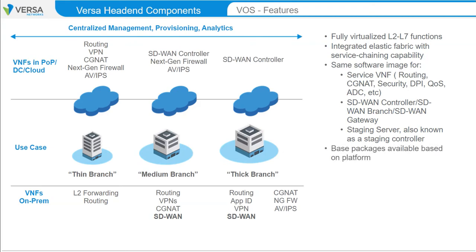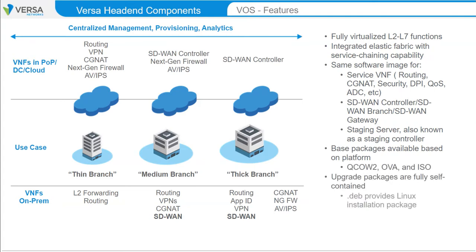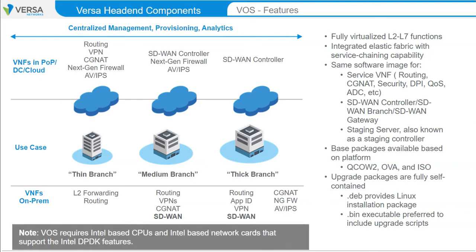Software packages for VOS are available as QCOW2, OVA, and ISO images. Because VOS leverages CPU and network cards that support specific feature sets, only Intel-based CPUs and network cards that support the Intel Data Plane Developer Kit, or DPDK, are supported.